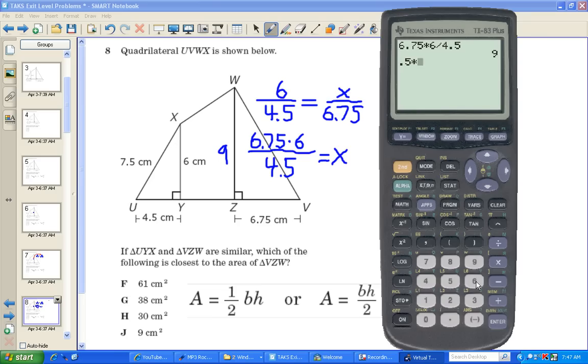One-half base times height. So we put in 0.5 for one-half. Then we multiply that times the base, which is 6.75. And then we multiply that times the height we just calculated, which is 9. And we get 30.375.